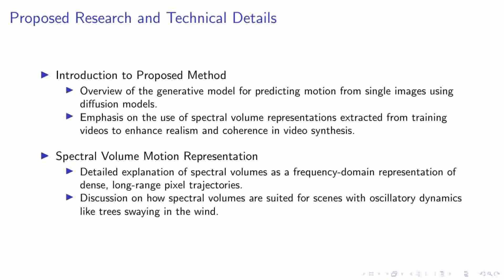At the core of our proposed method, we harness the power of diffusion models to predict motion from single images. Our approach is rooted in the extraction of spectral volumes from training videos — a carefully chosen frequency domain representation that captures dense, long-range pixel trajectories. This choice directly influences the realism and coherence of the synthesized video content. The spectral volume motion representation is particularly effective for scenes with oscillatory dynamics. Imagine trees swaying in the wind or flowers bobbing in a breeze — the spectral volumes capture these subtle yet complex motions, recreating natural movements that are both believable and visually pleasing.